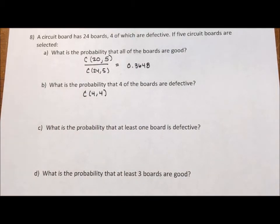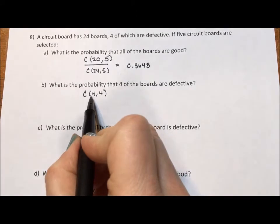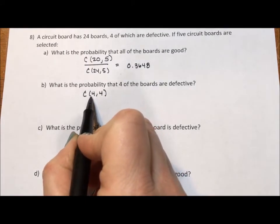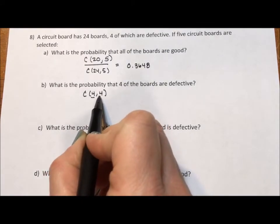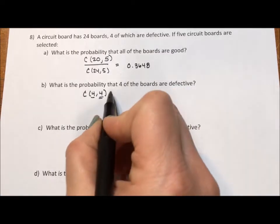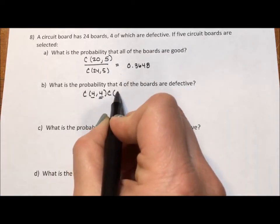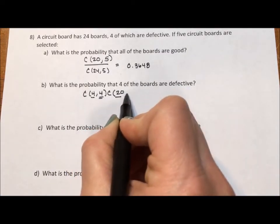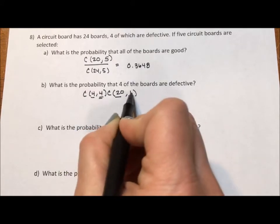If you think about it, if order doesn't matter, C(4,4) should really be just one. And it is if we did the calculations. But that doesn't matter. What we really want to look at is this is the number of defective boards and the number in the selection. And then we need to multiply by the number of good boards.